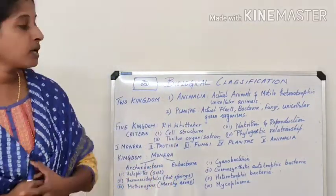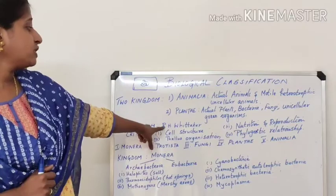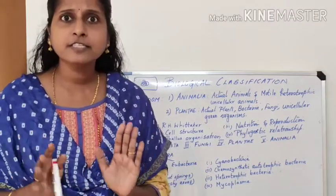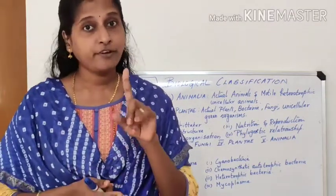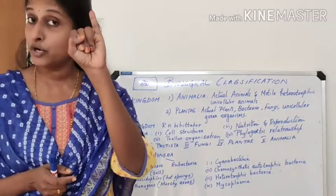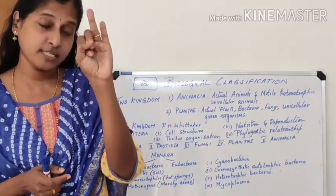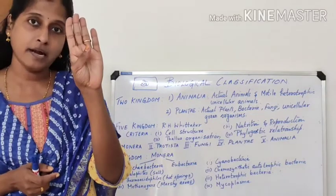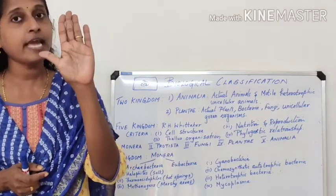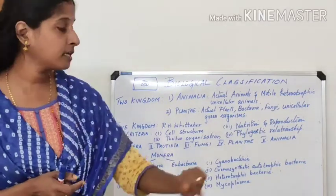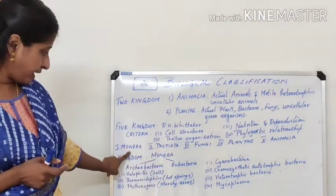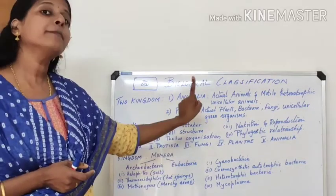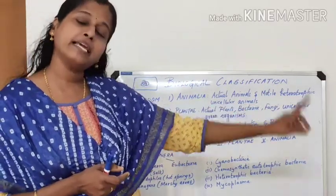The five-kingdom classification was proposed by R.H. Whittaker. The five kingdoms are: 1. Monera, 2. Protista, 3. Fungi, 4. Plantae, and 5. Animalia.